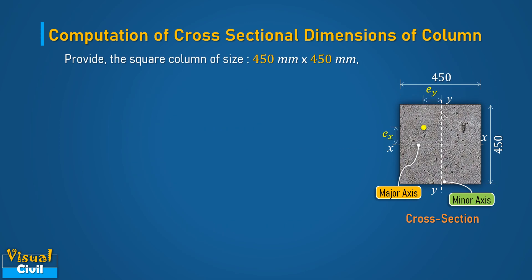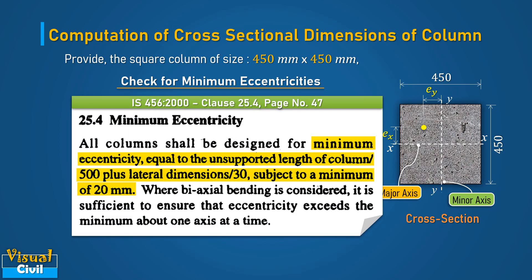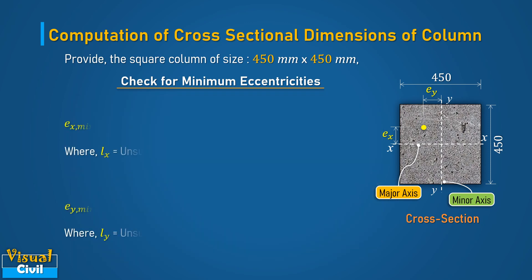Next, check the column dimensions for minimum eccentricity. As per clause 25.4 of IS456, all columns shall be designed for minimum eccentricity, which is equal to unsupported length divided by 500 plus lateral dimension divided by 30, subjected to a minimum of 20 mm. Let us calculate the minimum eccentricities EX and EY.